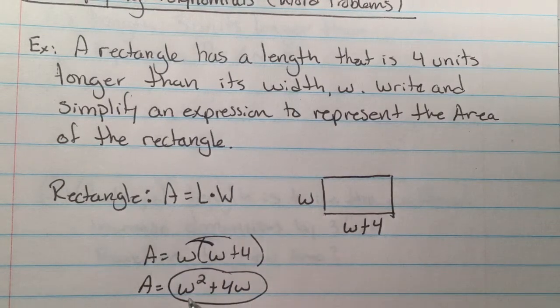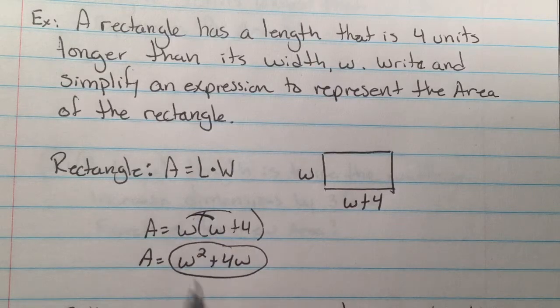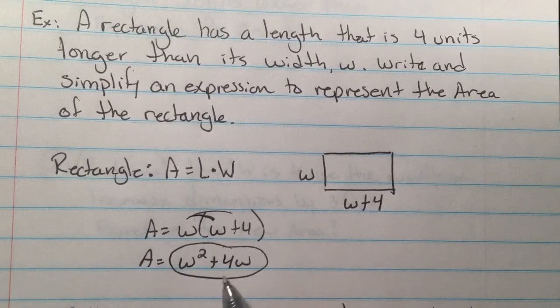w times w is w squared. Remember, you're adding your exponents, one and one. And w times four makes four w.